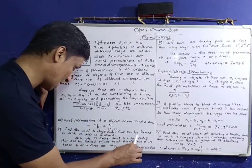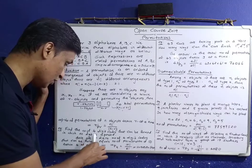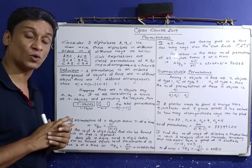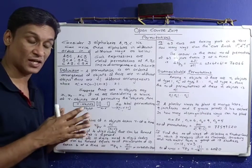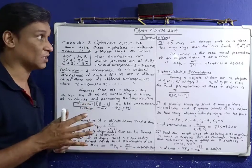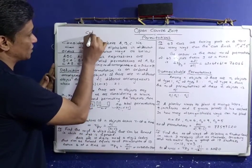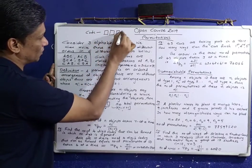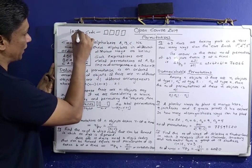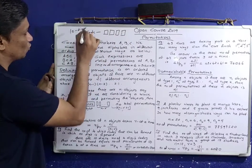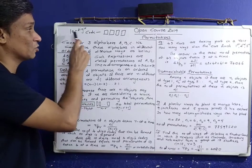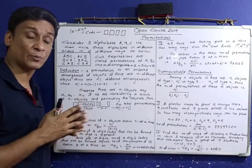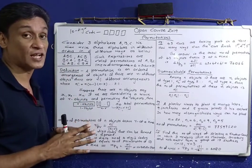Find the number of four-digit codes that can be formed in which no digit is repeated. There are four digits, and there are a total of 10 digits: 0, 1, 2, up to 9. We need to find how many codes can be made from 10 digits. There is nothing but the number of permutations of 10 objects taken 4 at a time.